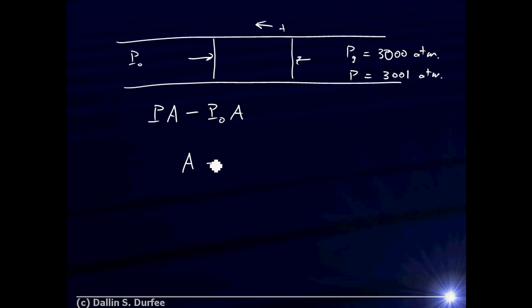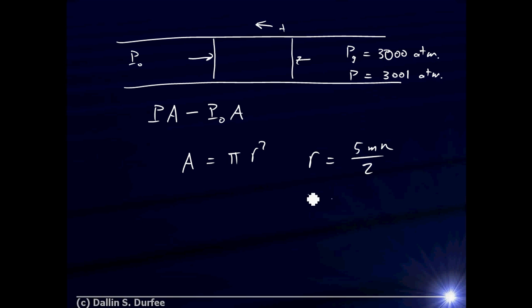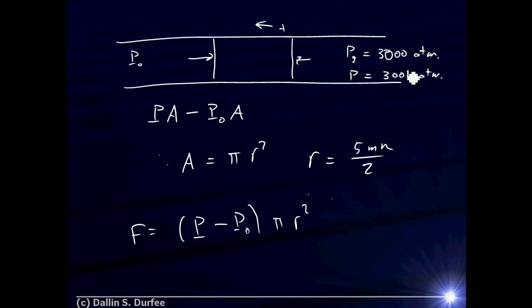I just need to know the area — it's the cross-sectional area of my cylinder, pi·r², where the diameter is 5 millimeters, so I divide by 2 to get the radius. Never forget to convert from diameter to radius — students lose points needlessly on exams all the time by confusing radius and diameter. So the net force is just the pressure on the back minus the pressure on the front, times pi·r². One thing to note: we ended up taking 3,001 atmospheres and subtracting off one atmosphere, which gives 3,000 atmospheres — exactly the gauge pressure.